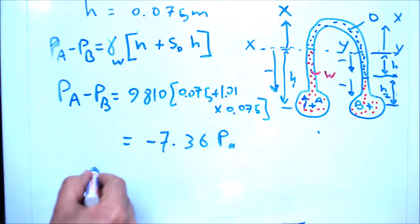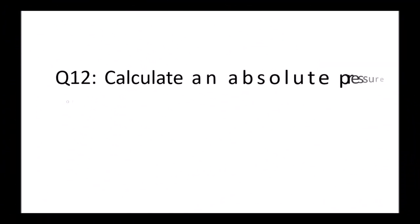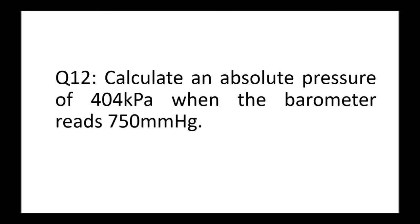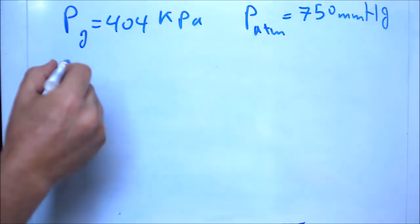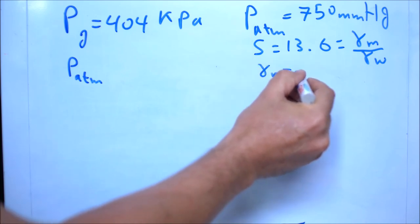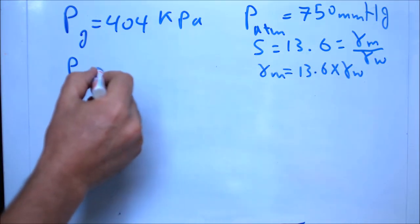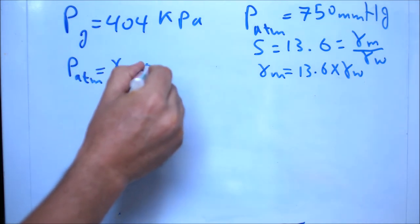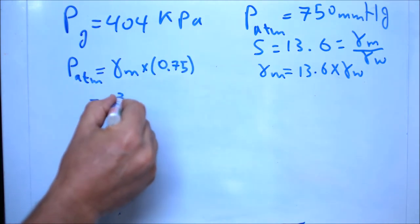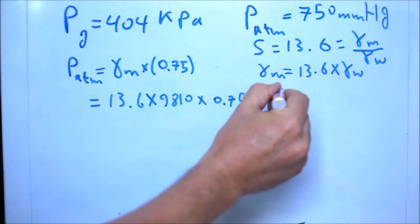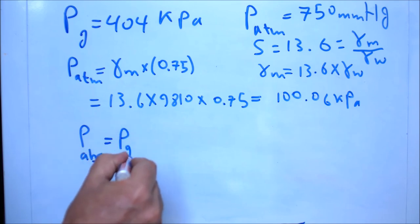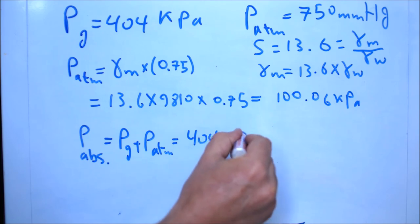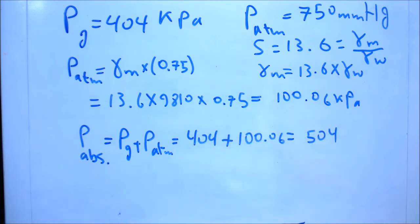Question twelve: we have a pressure gauge reading of 404 kilopascal for some gas, and the atmospheric pressure is 750 millimeter mercury equivalent. Calculate the absolute pressure. S mercury is approximately 13.6, so gamma mercury = 13.6 times gamma water. The atmospheric pressure from the barometer is gamma mercury times 0.75 = 13.6 × 9810 × 0.75 = 100 kilopascal. Absolute pressure equals atmospheric plus gauge pressure: 404 plus 100 = 504 kilopascal.